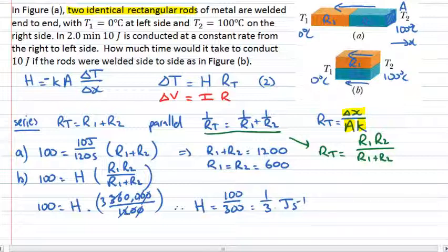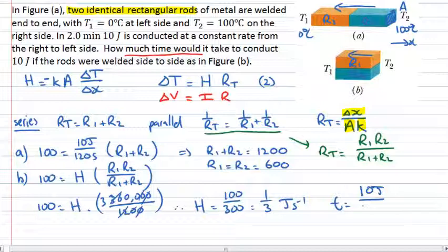Now, I want to find out how much time it takes, remembering how much time it takes in order to pass 10 joules. Therefore, the time it takes is going to be 10 joules divided by the rate, which is one third of a joule per second. The joules cancel, and 10 divided by a third is 30 seconds.